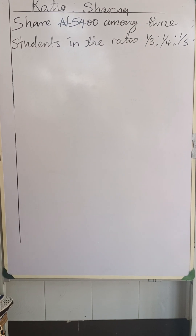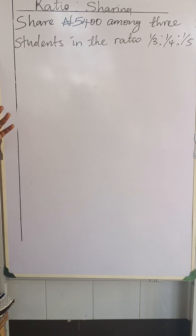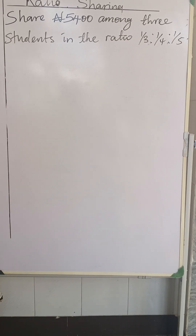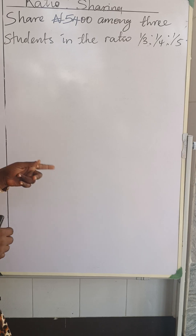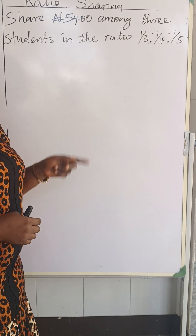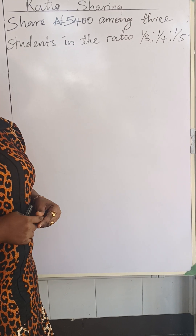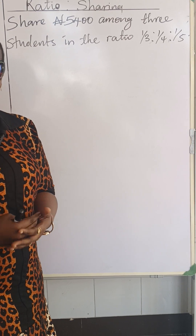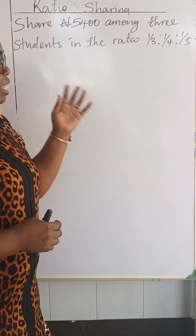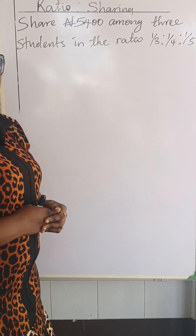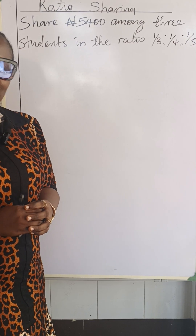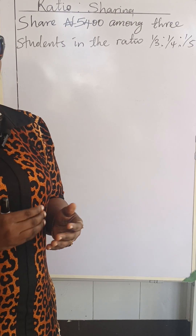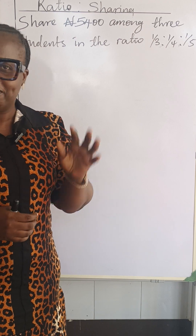Now we have a new question on the board: share five thousand four hundred naira among three students in the ratio one over three, one over four, and one over five. Please use the same method we just used and put your answers in the comments. If you like what we do on this channel, please subscribe and share. Bye!